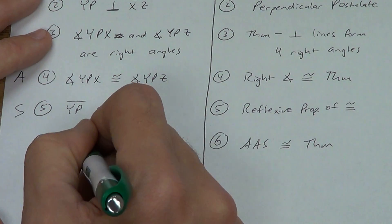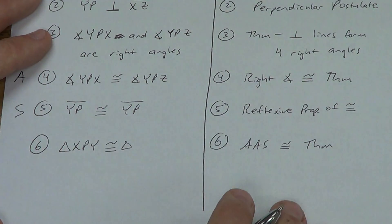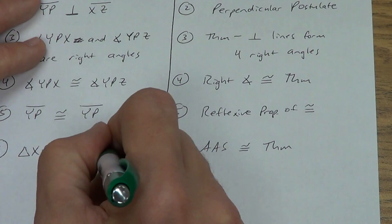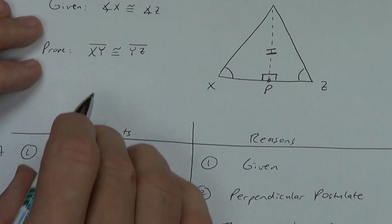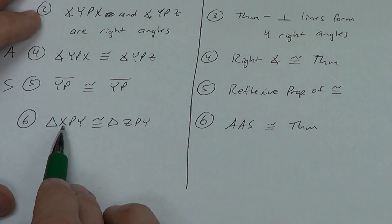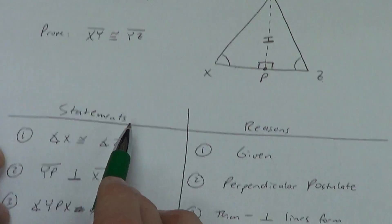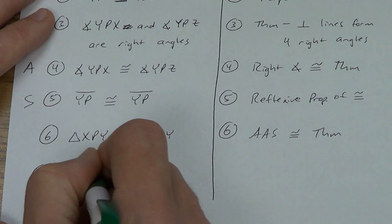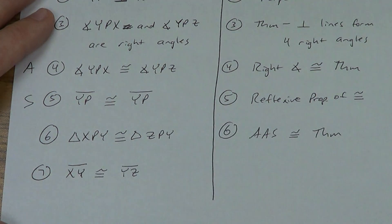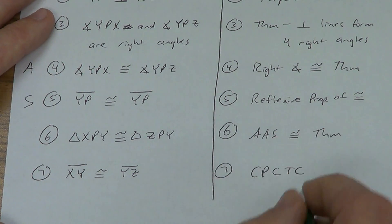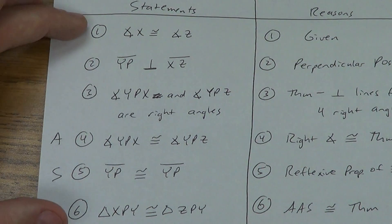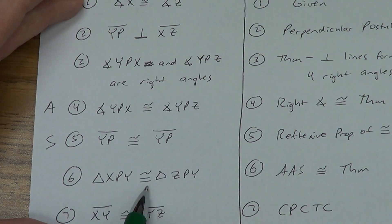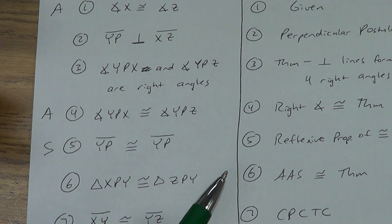We want XY congruent to YZ. Looking at the triangle names: X and Z are first letters, Y is the last letter in both. XY and ZY — or YZ — are the first and last vertices. Does the order of a segment matter? No. So XY is congruent to YZ by CPCTC. We just proved that the converse works. From now on, if you know the angles are congruent, you can skip all these steps and use the converse of the base angle theorem directly.